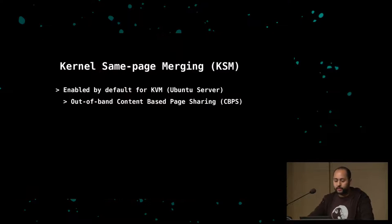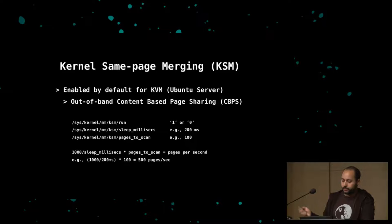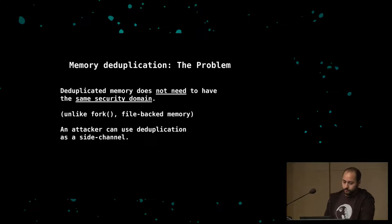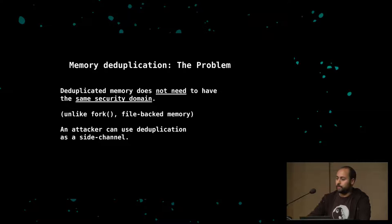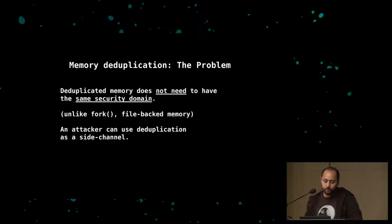One implementation is Kernel Same-Page Merging (KSM) with KVM. On an Ubuntu system it's enabled by default — you can check the run file under the sys filesystem. There are parameters to define how fast memory deduplication should work. The problem with memory deduplication in most implementations is that it doesn't respect the security domain — it works across different VMs and processes that cannot trust each other. That's the dilemma: saving memory makes sense, but it introduces a side channel.